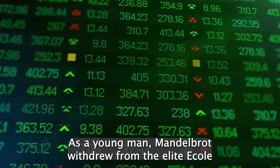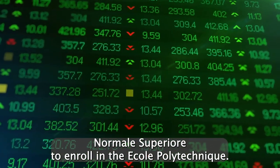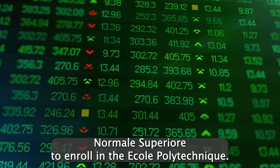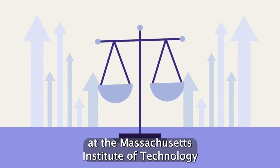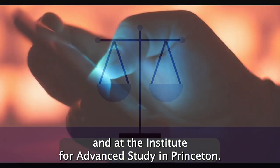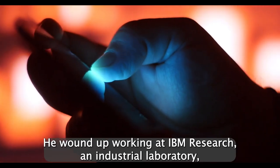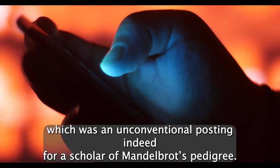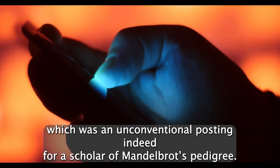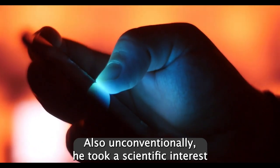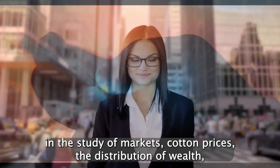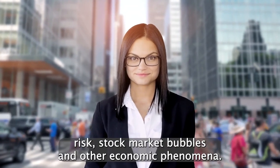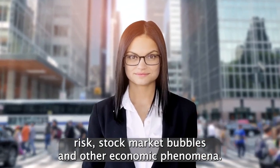As a young man, Mandelbrot withdrew from the elite Ecole Normale Superior to enroll in the Ecole Polytechnique. He went on to study at the California Institute of Technology, at the Massachusetts Institute of Technology, and at the Institute for Advanced Study in Princeton. He wound up working at IBM Research, an industrial laboratory, which was an unconventional posting indeed for a scholar of Mandelbrot's pedigree. Also unconventionally, he took a scientific interest in the study of markets, cotton prices, the distribution of wealth, risk, stock market bubbles, and other economic phenomena.